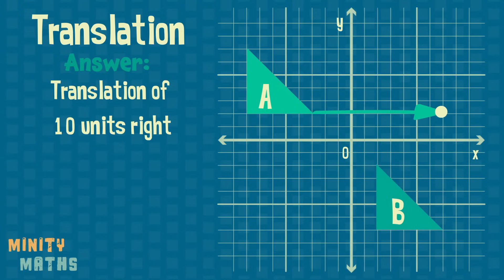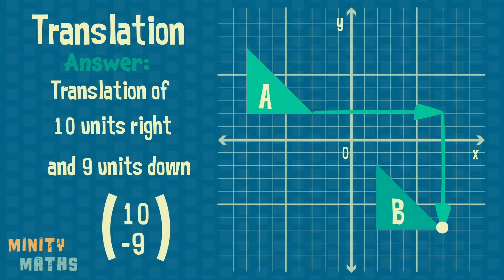Pick any vertex of the shape and use this to count how many units the shape has moved horizontally and vertically. We can also use vectors to describe translations.